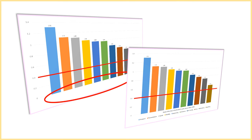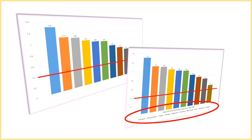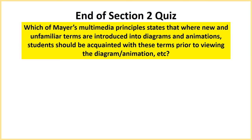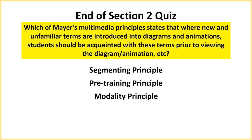There's a space for some text at the bottom of the diagram, and I've put a reveal in there so that when students initially see the diagram, they're directed very much to the idea that there are various different effect sizes — and later on I reveal the text. It's quite a simple example, but it helps draw attention to the chart and then show which elements of the multimedia principles apply to which effect sizes. That's a simple example of the modality principle. End of section two quiz: which of Mayer's multimedia principles states that when new and unfamiliar terms are introduced, students should be acquainted with them prior to viewing the diagram? It is of course the pre-training principle.